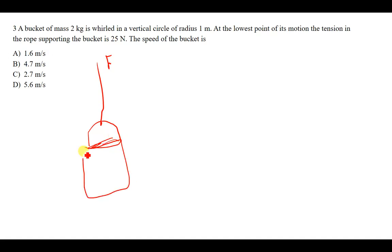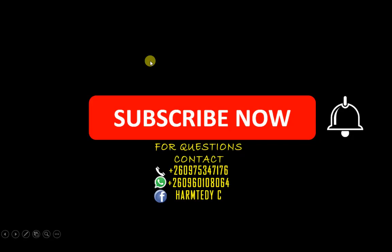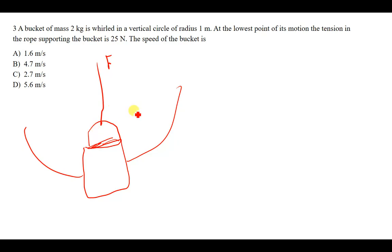They are saying a vertical circle, that's what the question says. So this is the bucket I'm drawing here, we have a circle like this. So we also need to have the centripetal force. We have this force here which is the tension and that has been given to be 25 newtons. Then we also have the force due to gravity which is equal to mg.